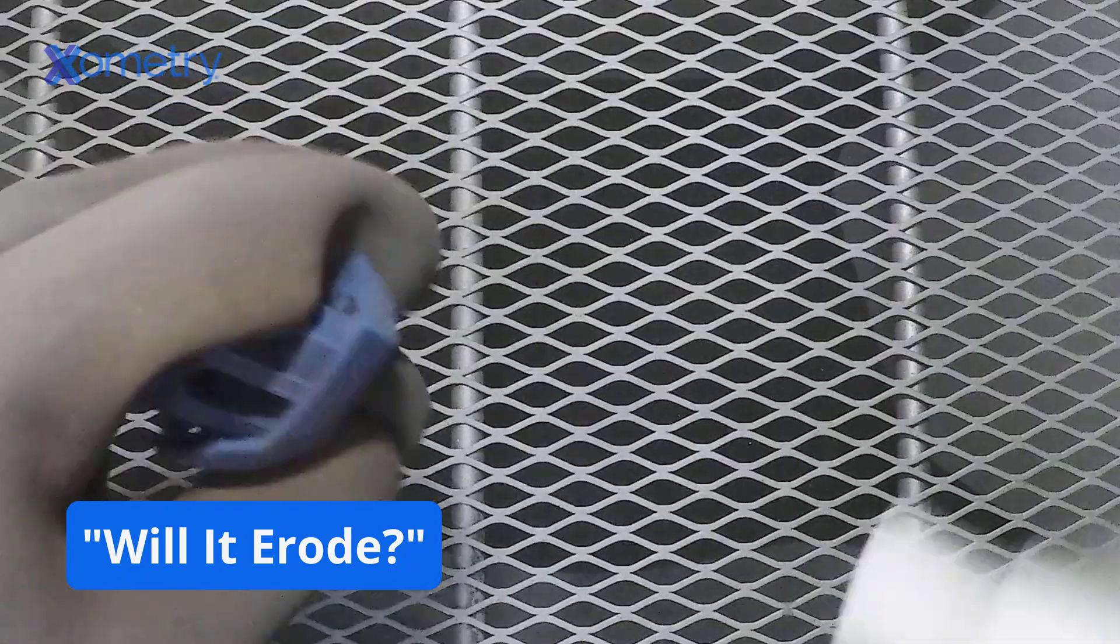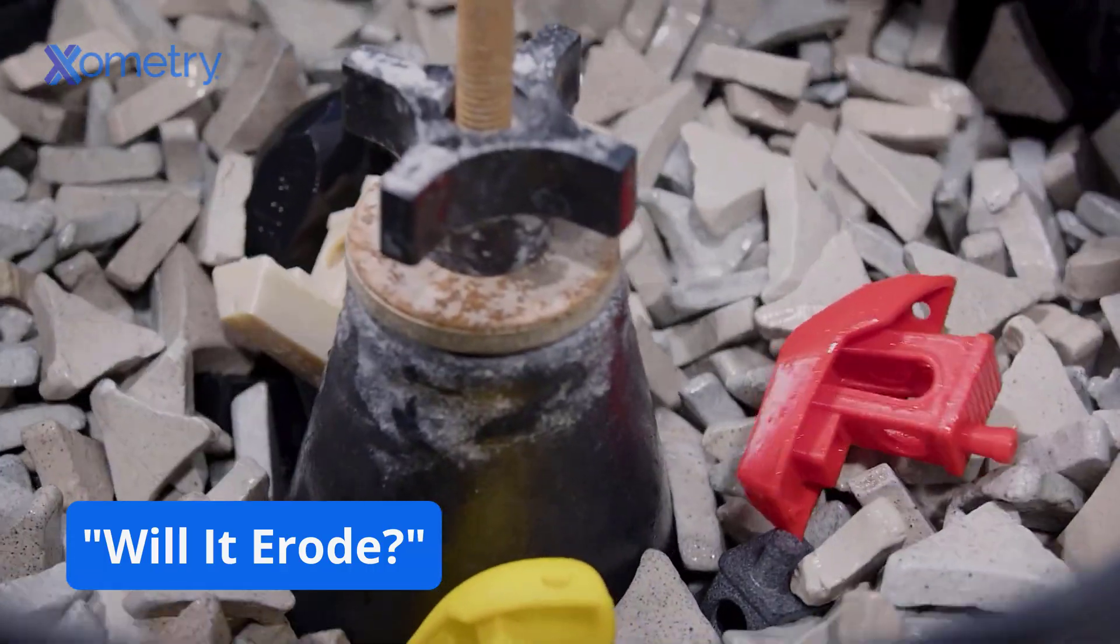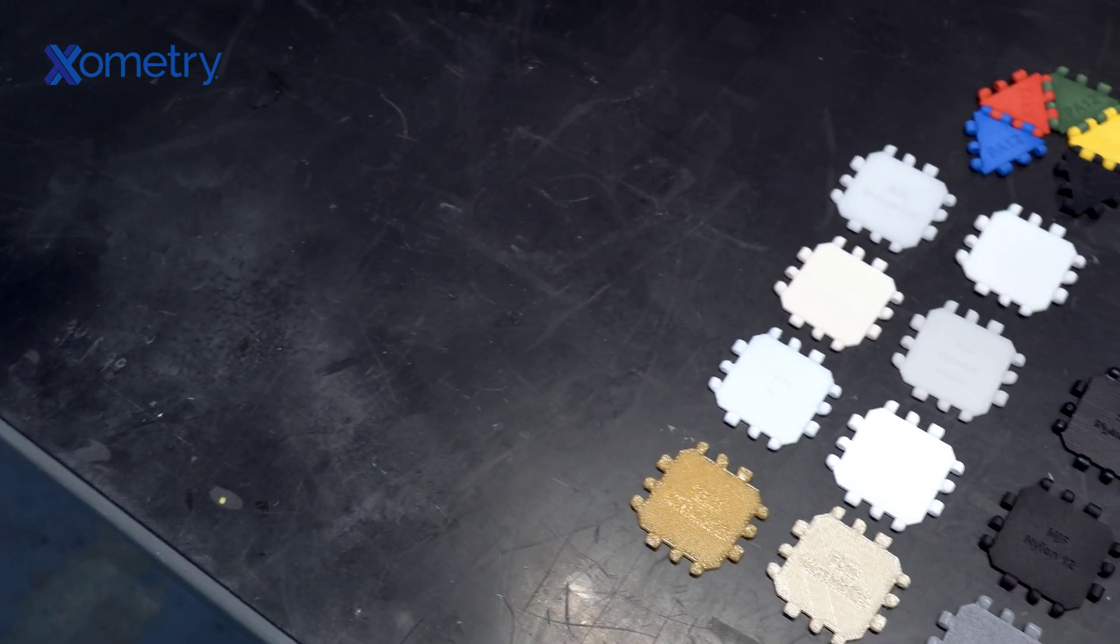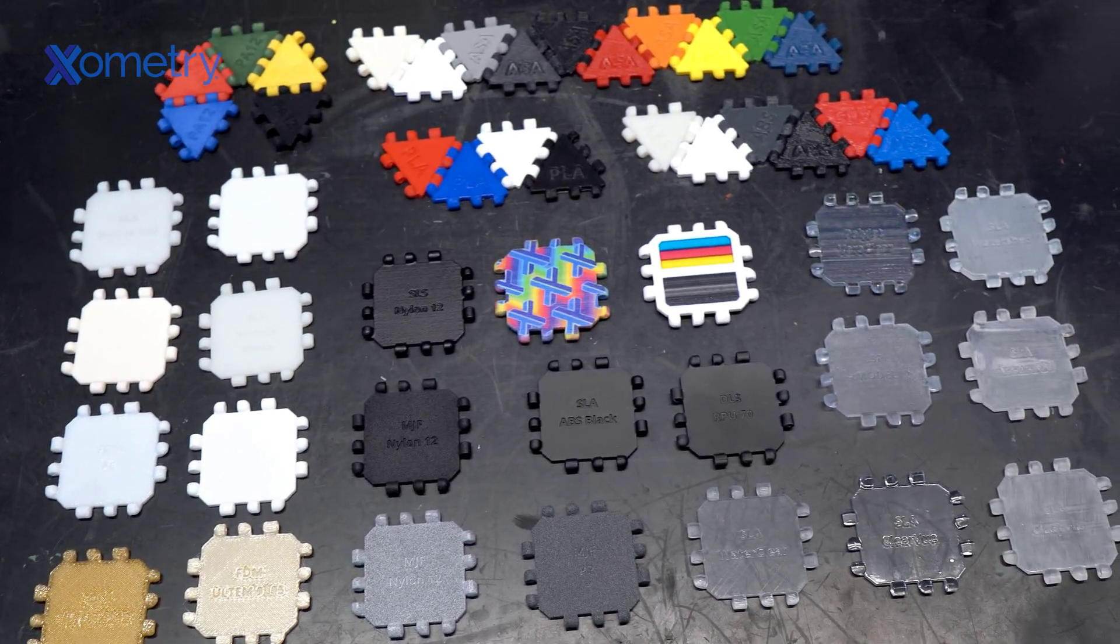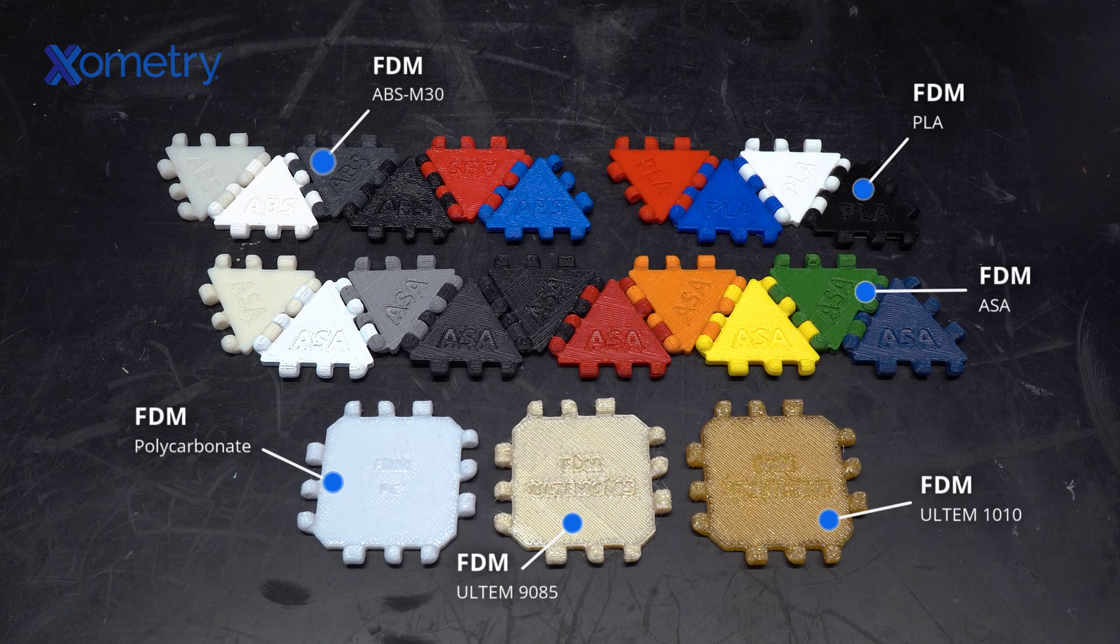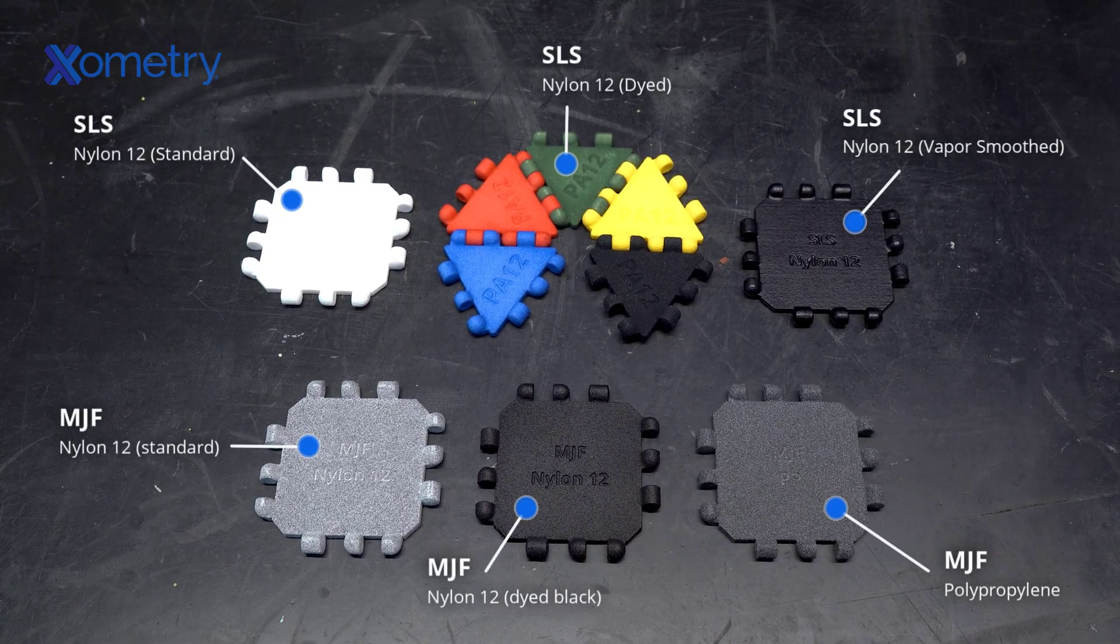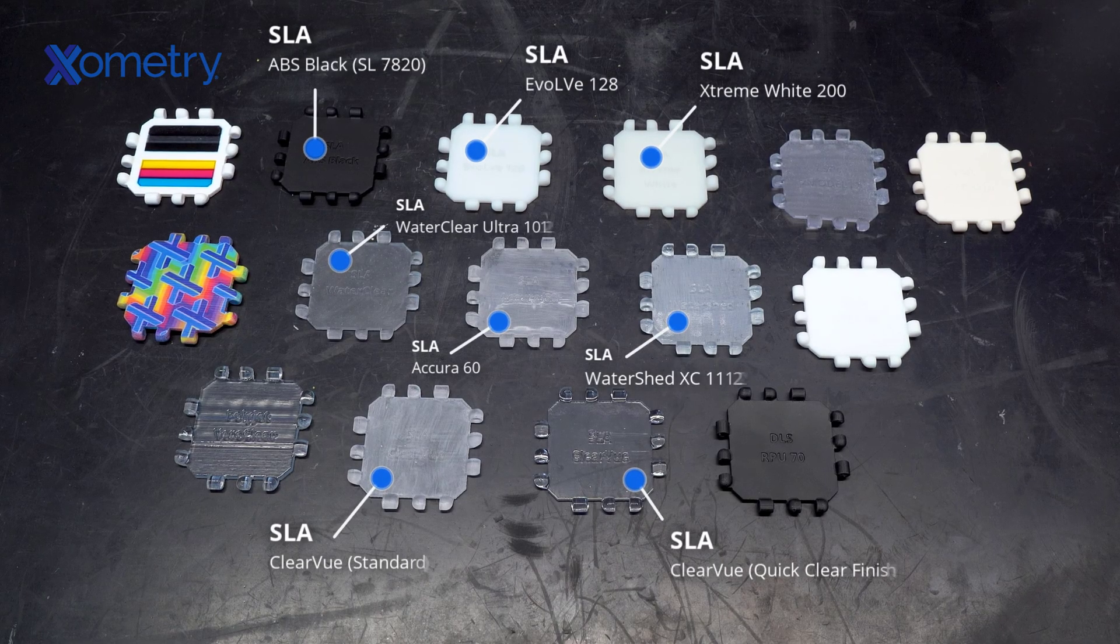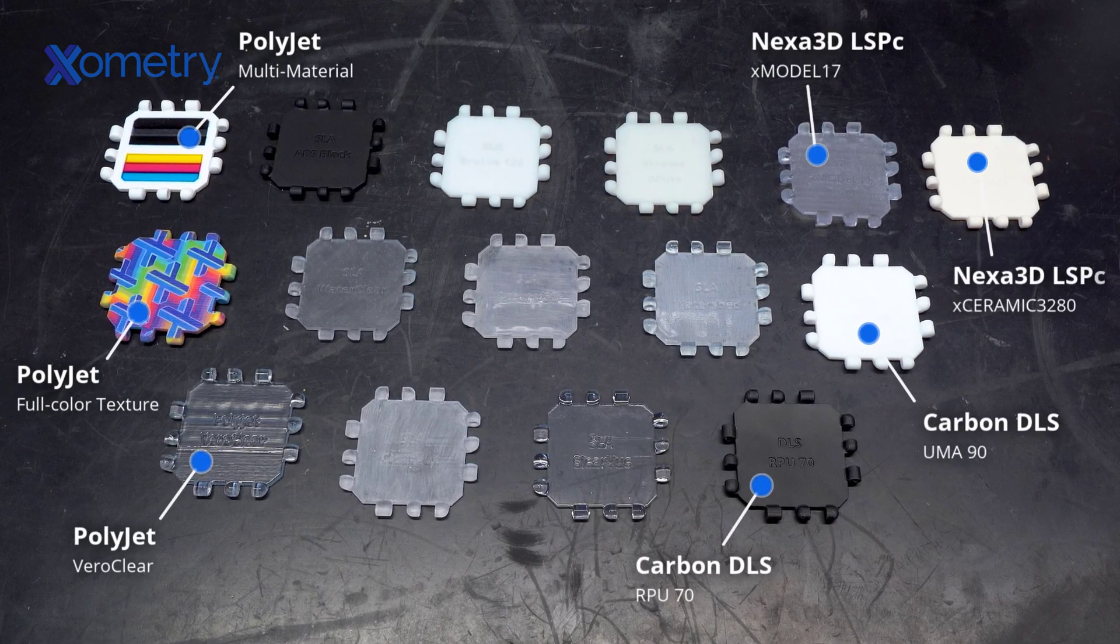If you've ever seen any of our previous videos, you know we like to perform experiments and find the answers ourselves. In this case, that is precisely what we're going to do. We printed these snap-together polypanel designs out of various materials using industrial grade additive manufacturing equipment. This includes filament-based thermoplastics using FDM, plastic powder bed fusion parts with SLS and MJF, and we also made panels out of resin-based materials from SLA, PolyJet, DLS, and LSPC.